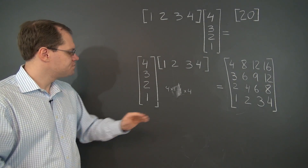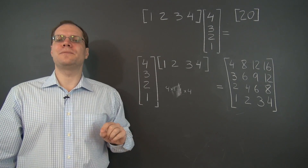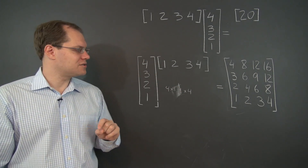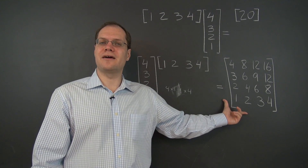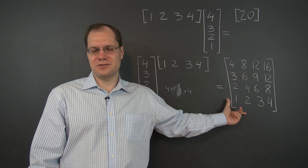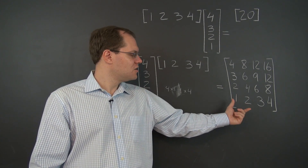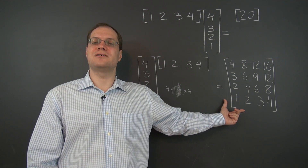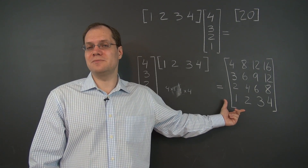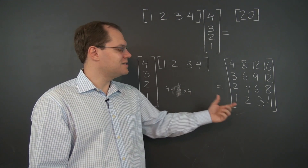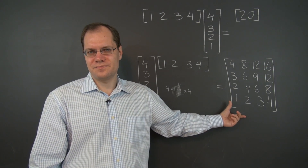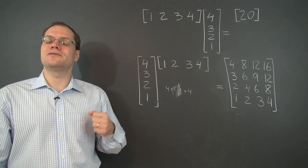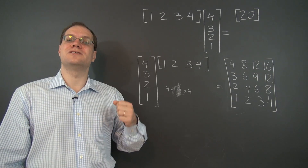So one follow-up question: this example is complete, but I do have one follow-up question, which is what is the rank of this matrix? Think back to our rank discussion — what's the rank of this matrix? What's the dimension of the column space, or equivalently, the dimension of the row space? And of course, the rank of this matrix is 1.